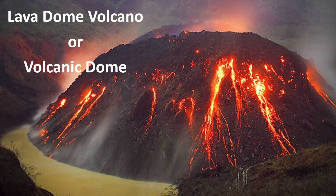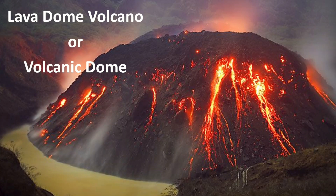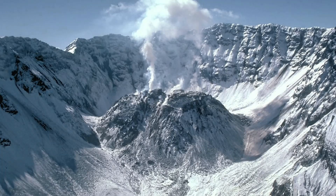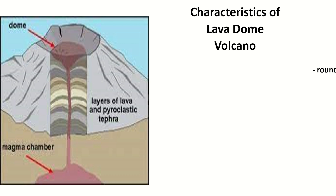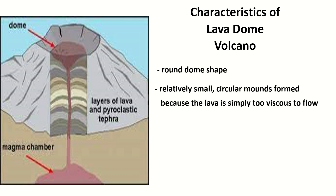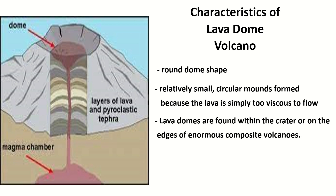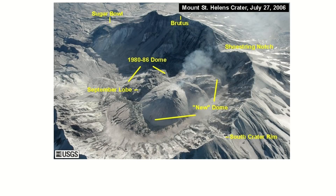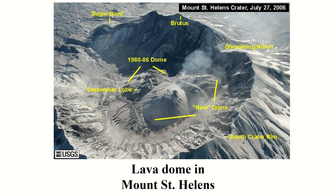The last type of volcano is Lava Dome Volcanoes, or Volcanic Domes. They are round, dome-shaped — relatively small circular mounds formed because the lava is simply too viscous to flow. Lava domes are found within the crater or on the edges of enormous composite volcanoes. The lava type is highly viscous. An example of a Lava Dome Volcano is the Lava Dome in Mount St. Helens.